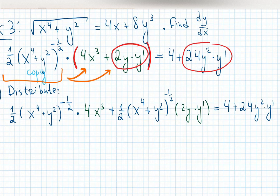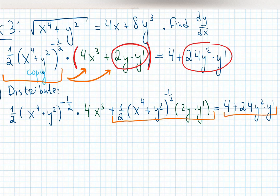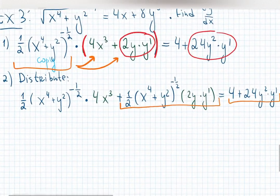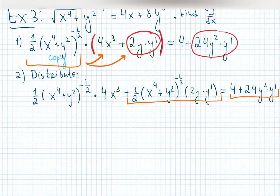Carefully distributing — you can simplify: 2 and one half, 4 and one half. Now I can completely identify parts multiplied by y prime. Move everything with y prime to the left hand side, and everything else to the right. I like moving to the left, then everything else — the garbage — goes to the right. Don't touch it until the last step. Step 3: move pieces with y prime to the left, and simplify.